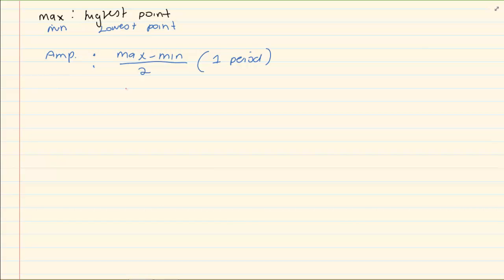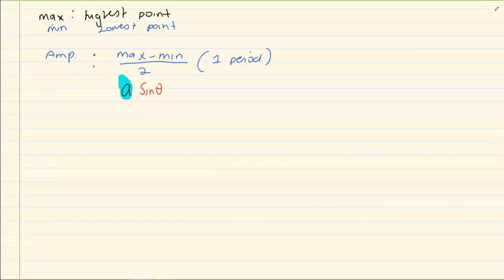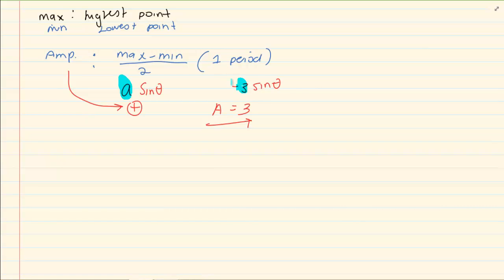The safest place to get your amplitude is the very first term in front of your equation — the number in front of your graph is usually the perfect place to take out your amplitude. Remember that amplitude is always positive. So if I told you minus 3 sin theta, my amplitude is going to equal 3.